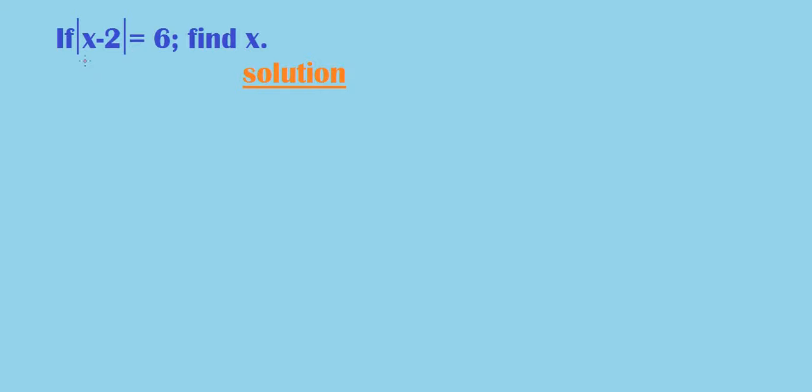Any number which gets outside the absolute sign will meet the brackets. So x minus 2 is going to meet the brackets, and we are going to have plus or minus here equals to 6.